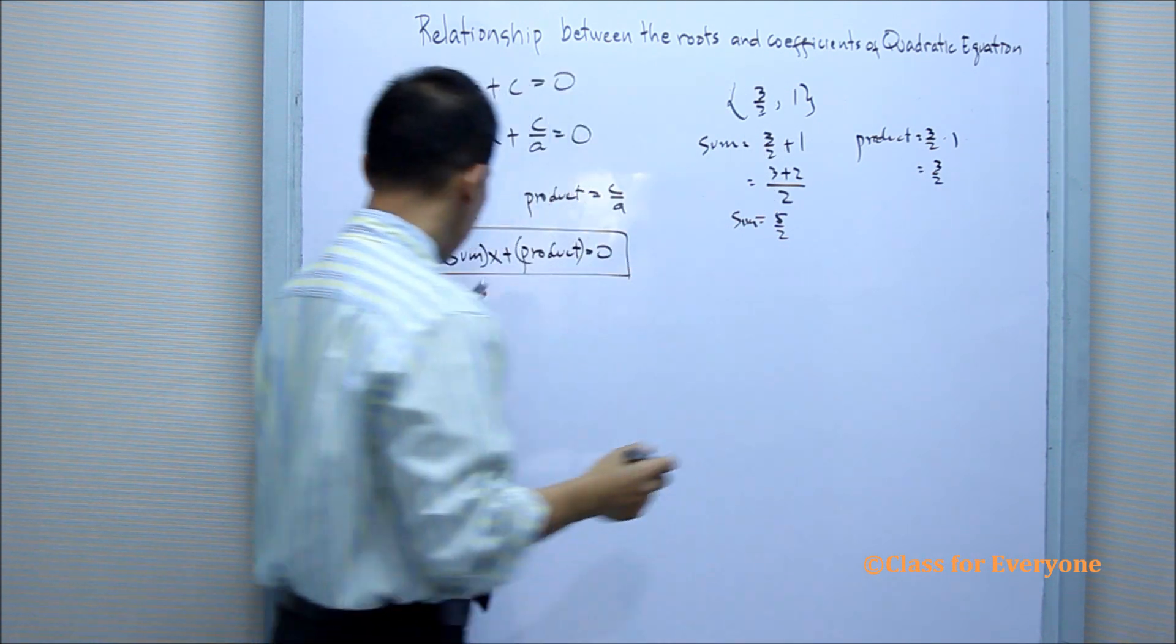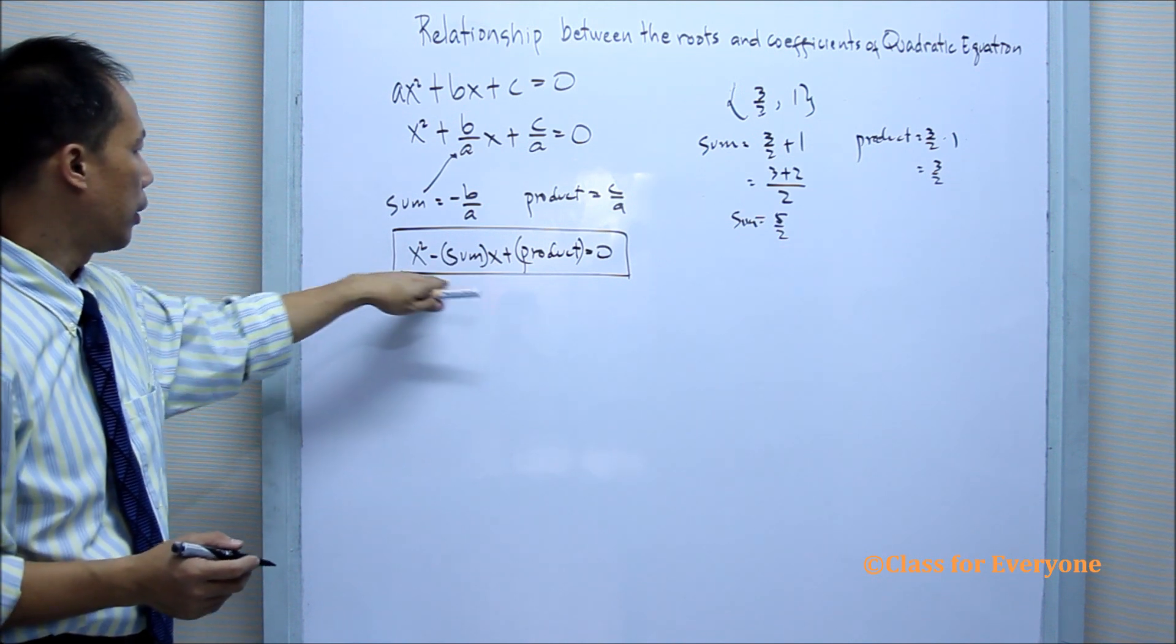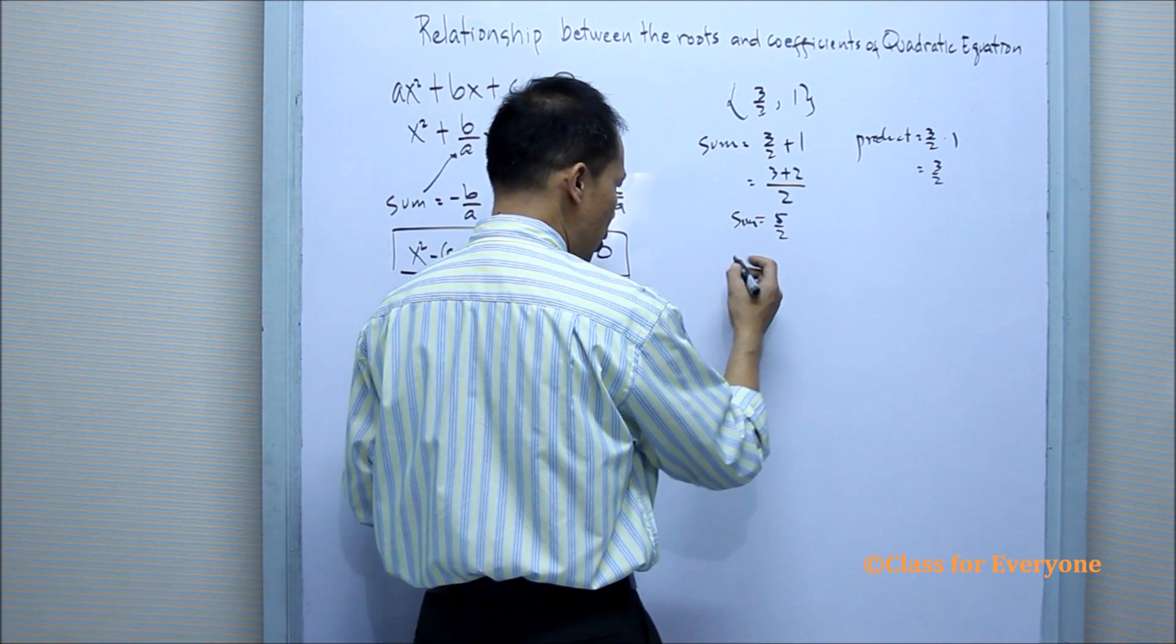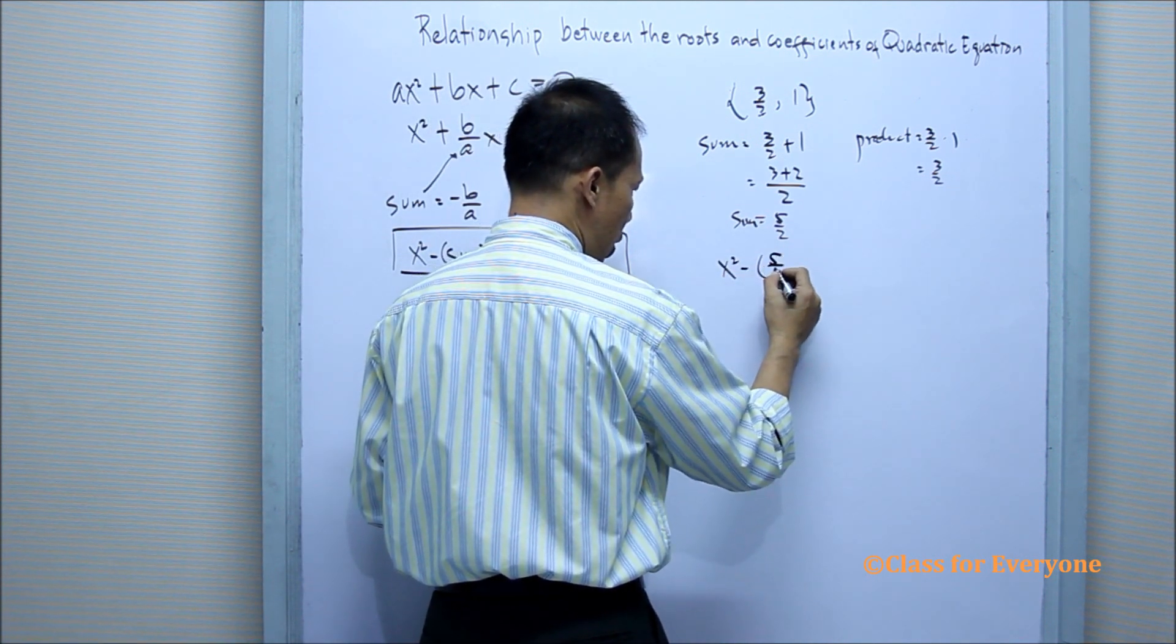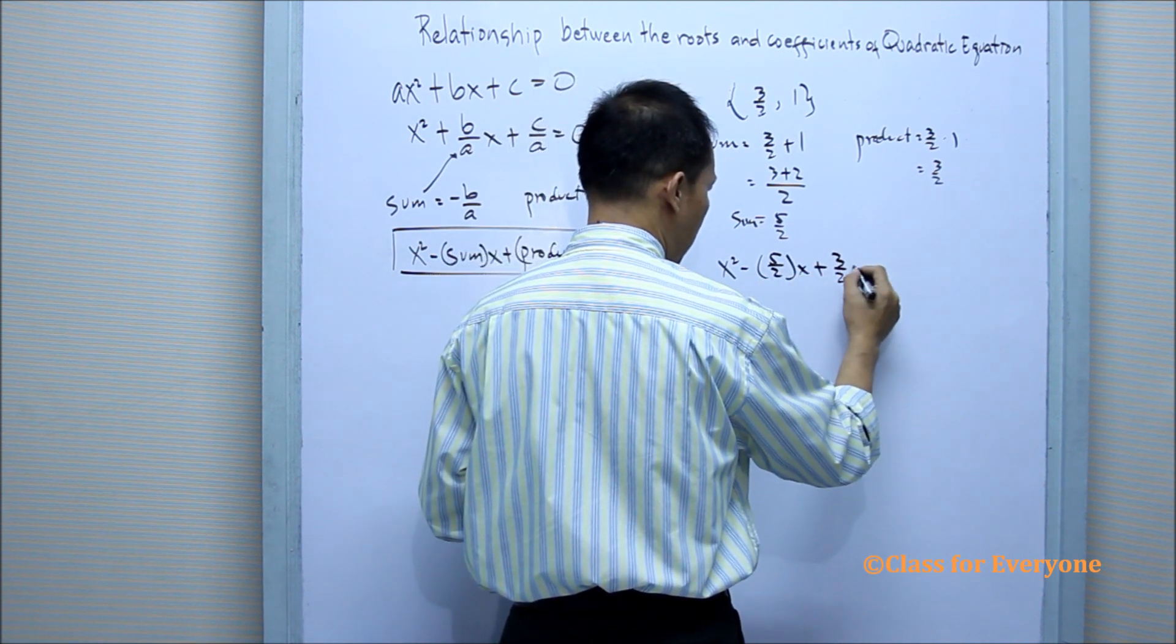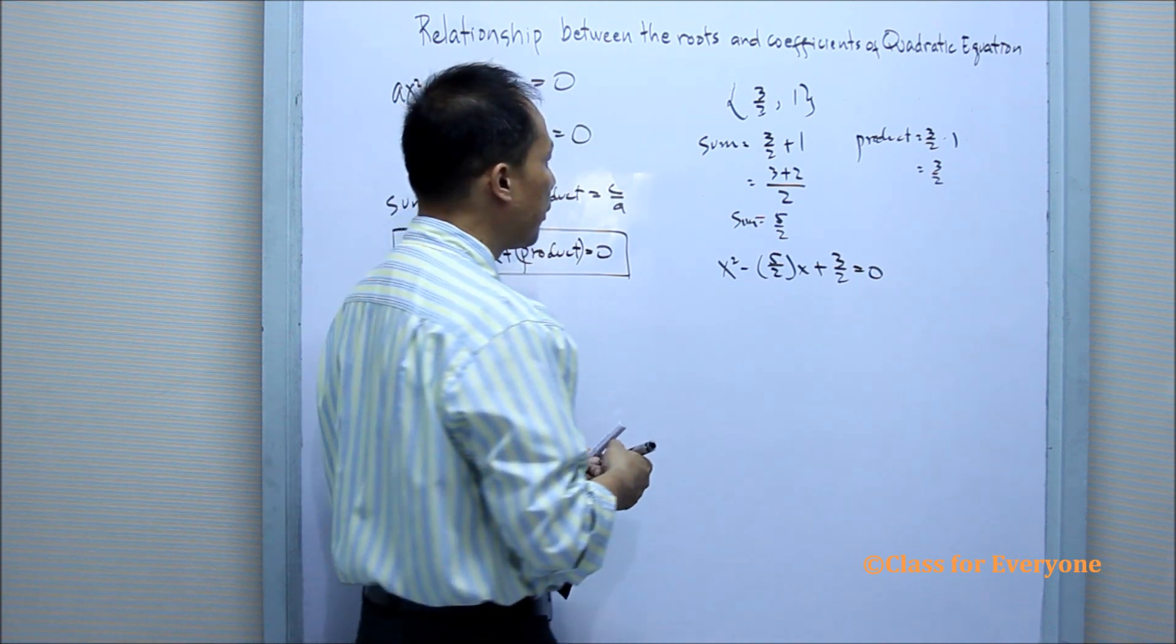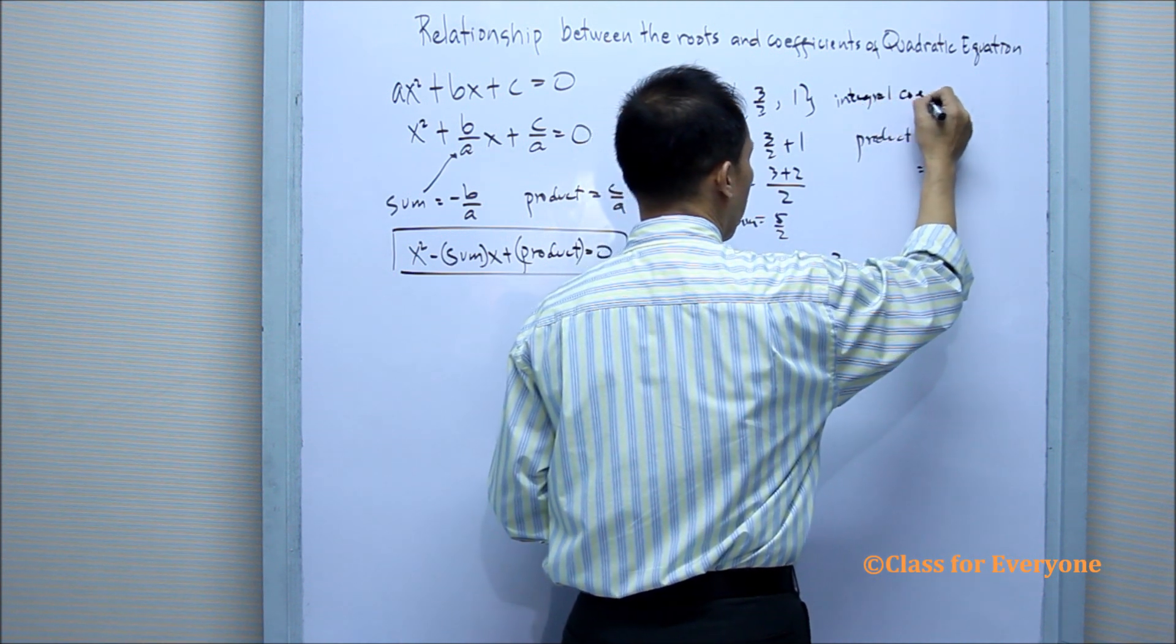Using this idea that x² - (sum)x + (product) = 0, then by substitution, x² minus the sum x plus the product equals 0. Since our goal is to have integral coefficients...